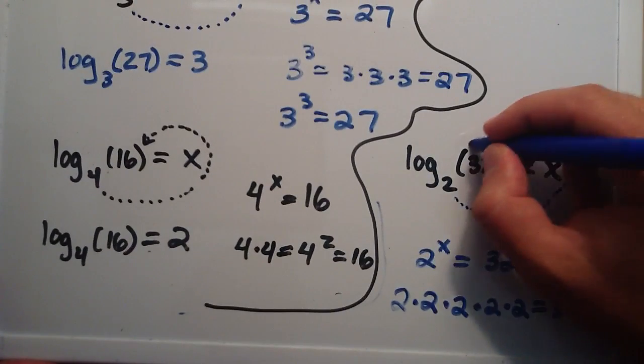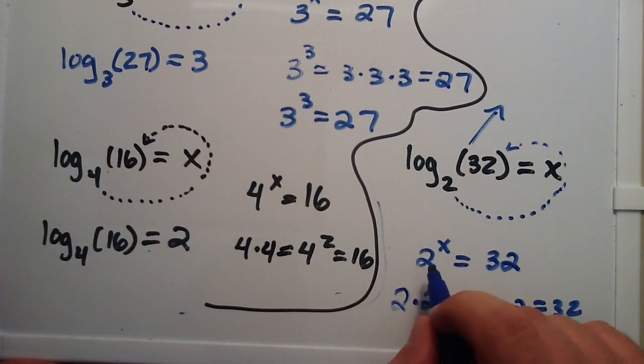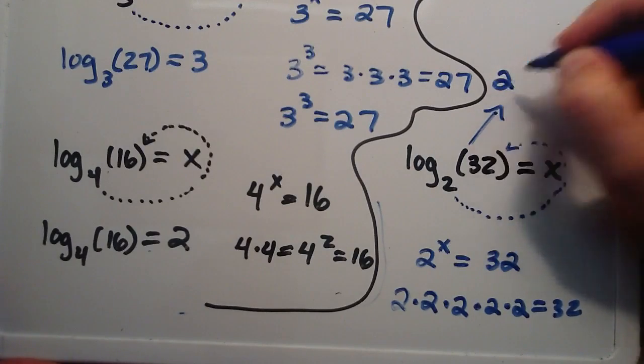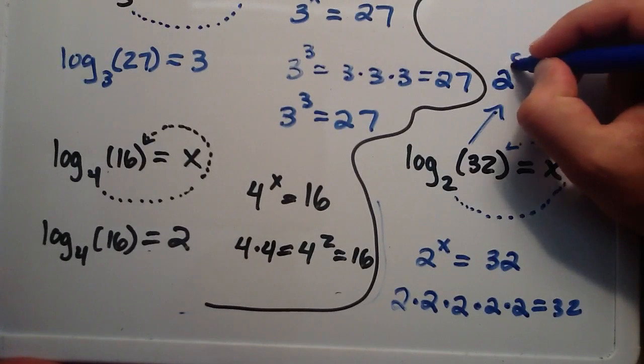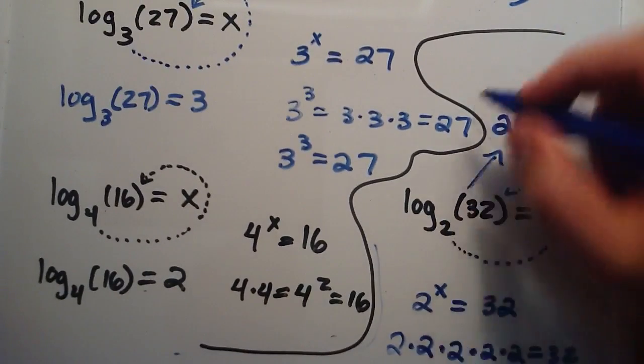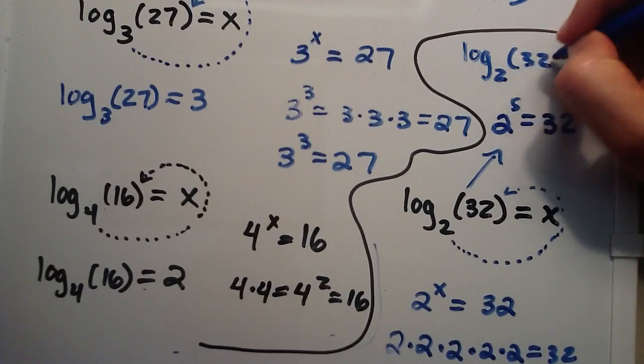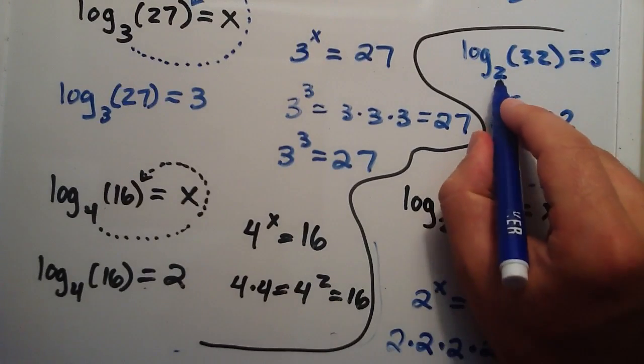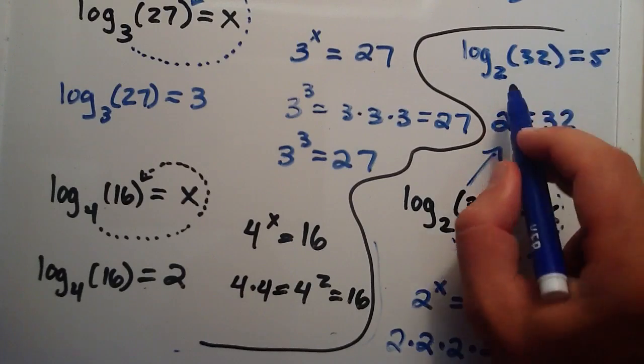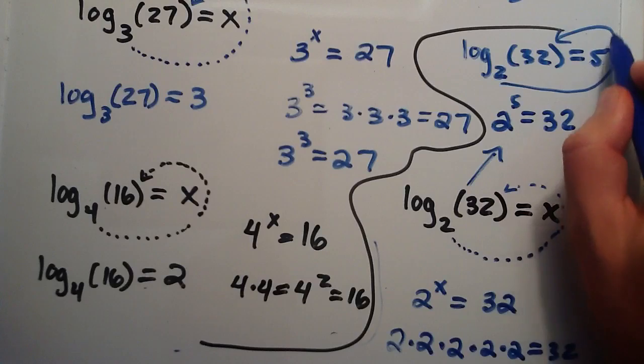So in this case, our x is equal to 5 because it took 2 multiplied by itself 5 times to equal 32. So 2 to the 5th equals 32. And another way to think about that is log base 2 of 32 equals 5. 2 raised to the 5th power equals 32, following the scorpion tail.